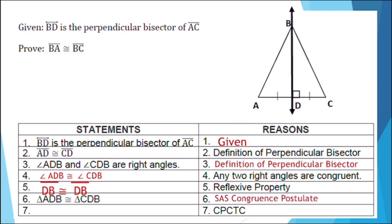For our last statement, if the reason is CPCTC, the answer is line segment BA is congruent to line segment BC. You have just proven the perpendicular bisector theorem using your knowledge on triangle congruence. We will discuss this further in the next slide of this lesson.